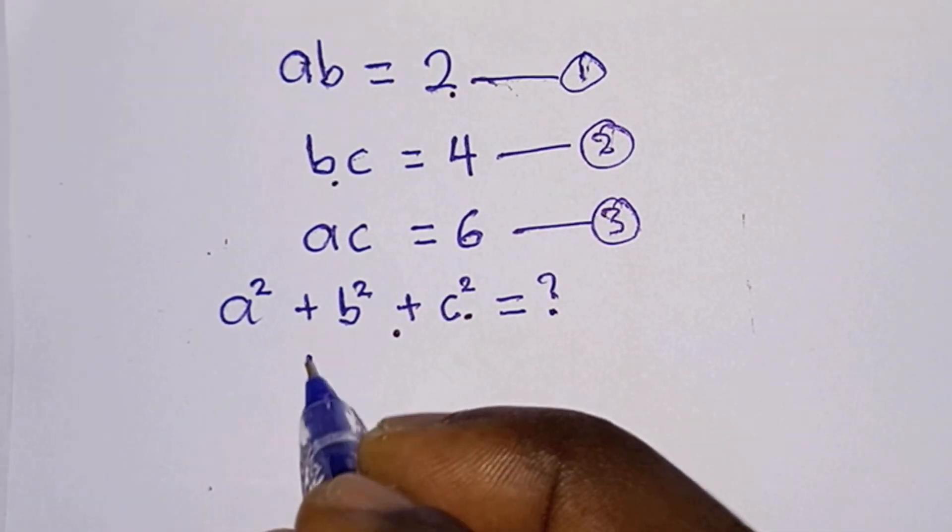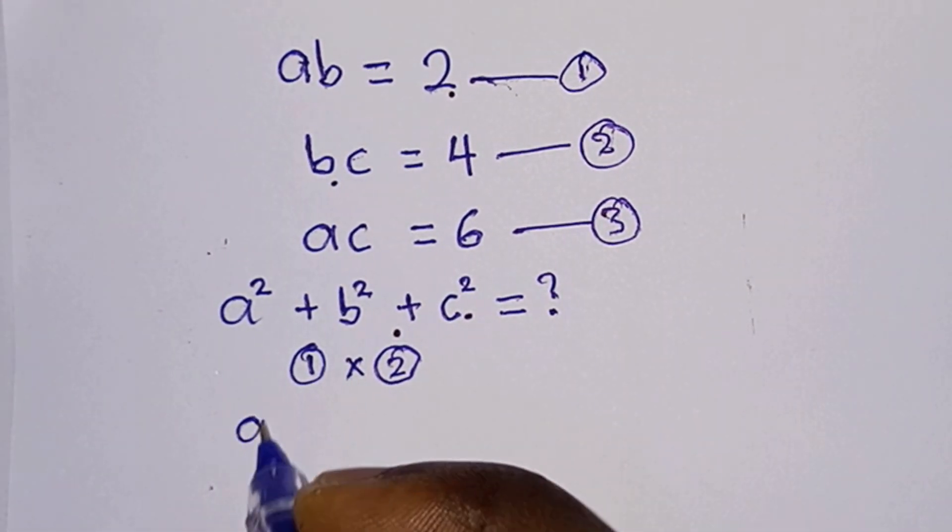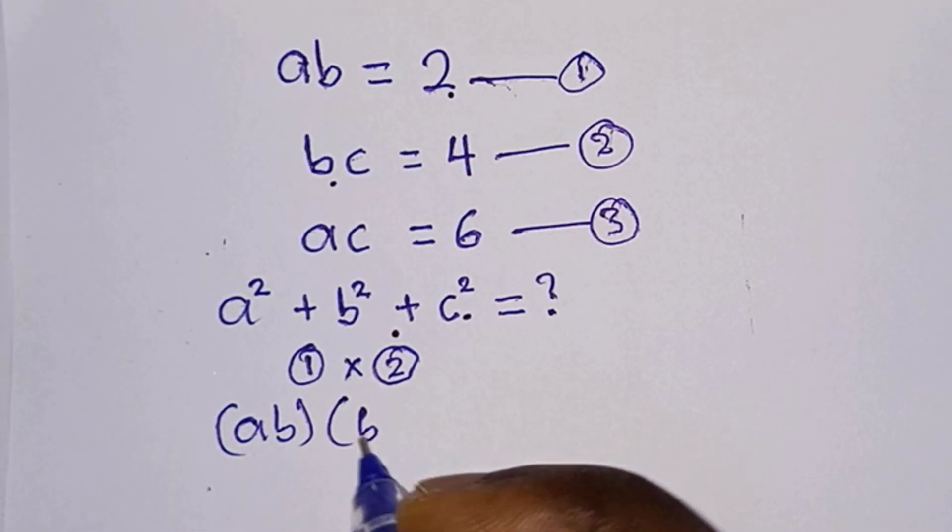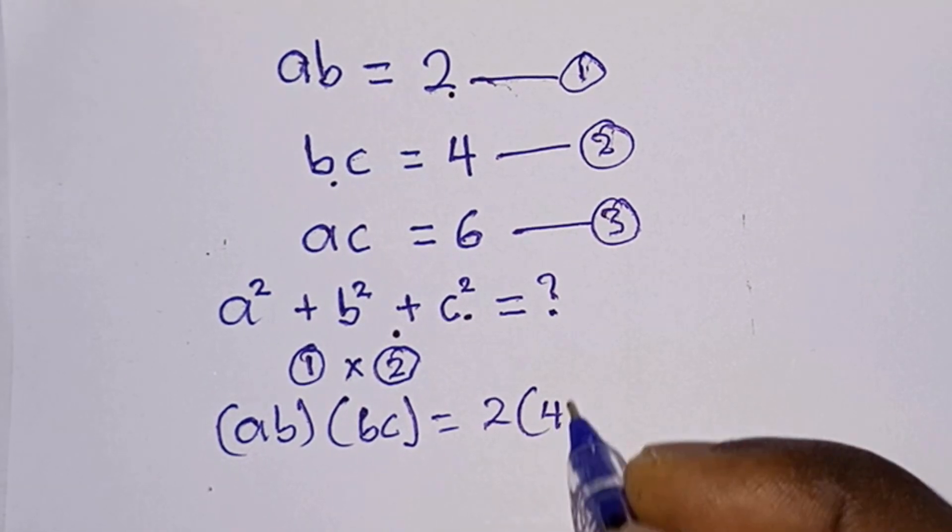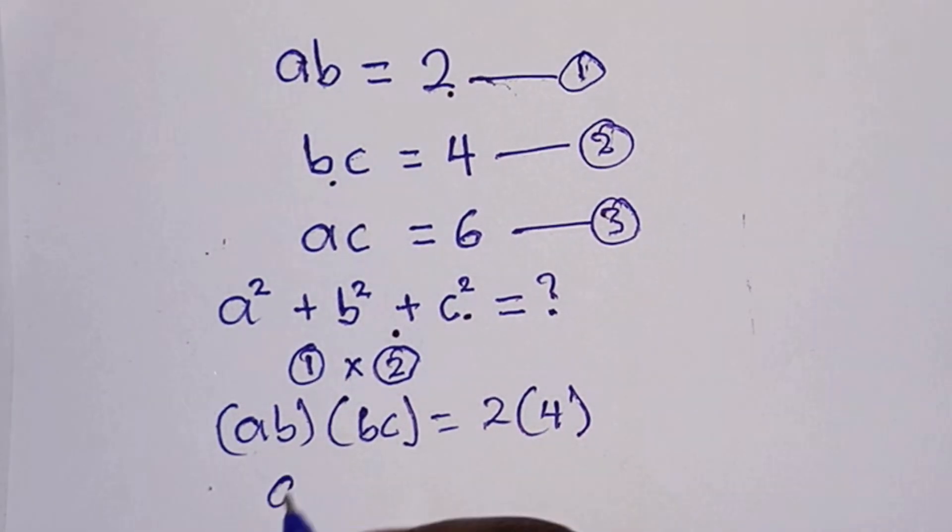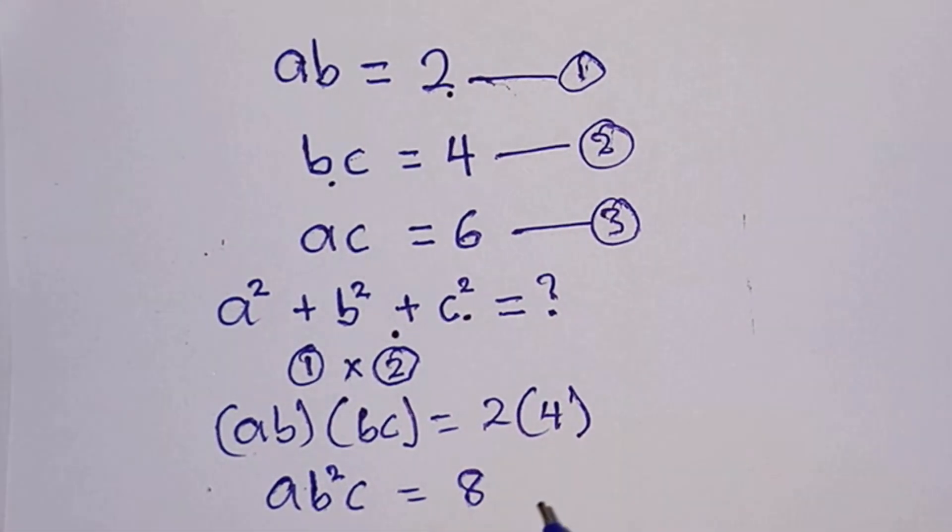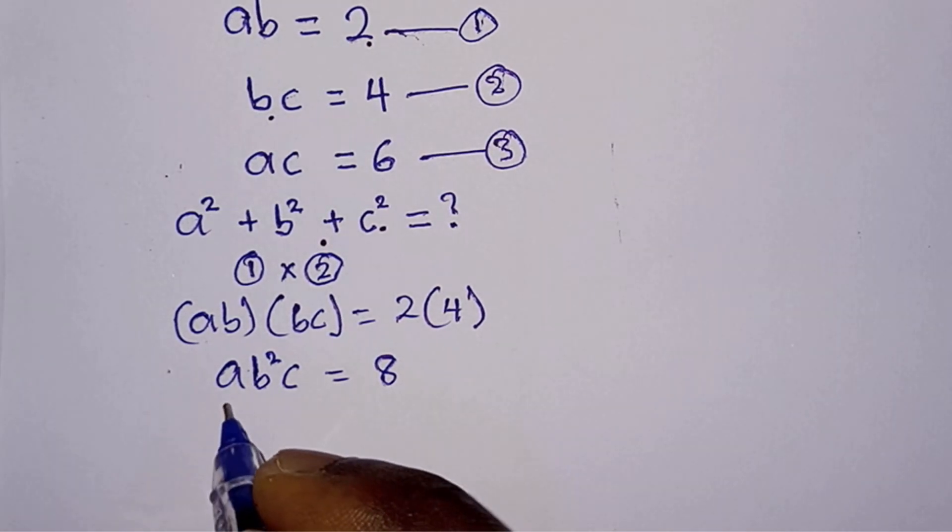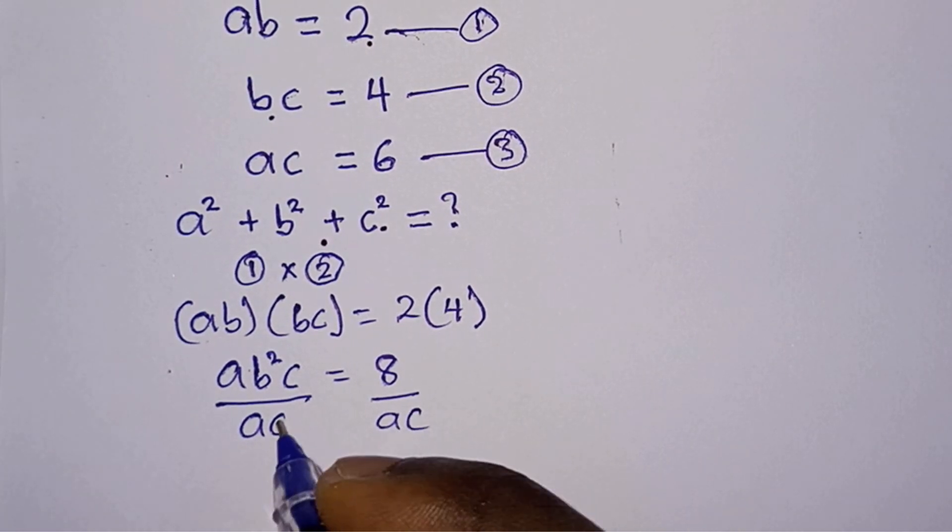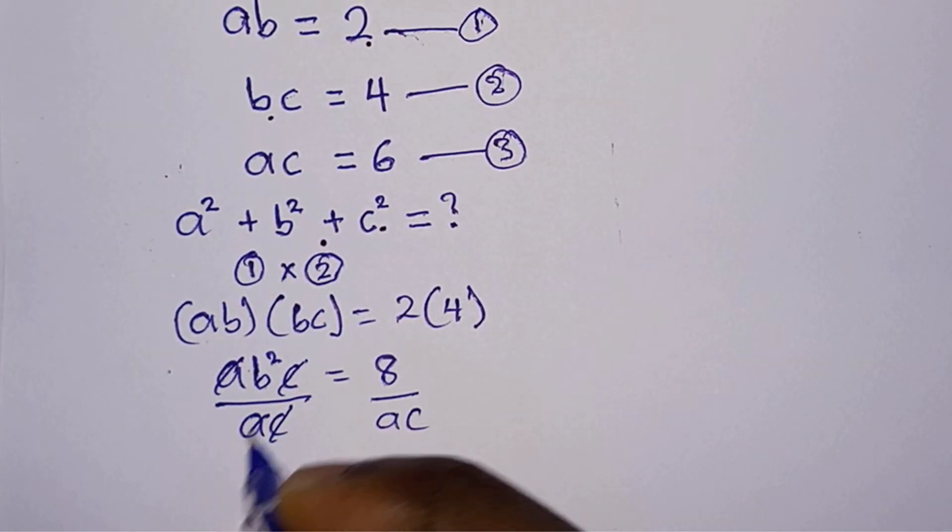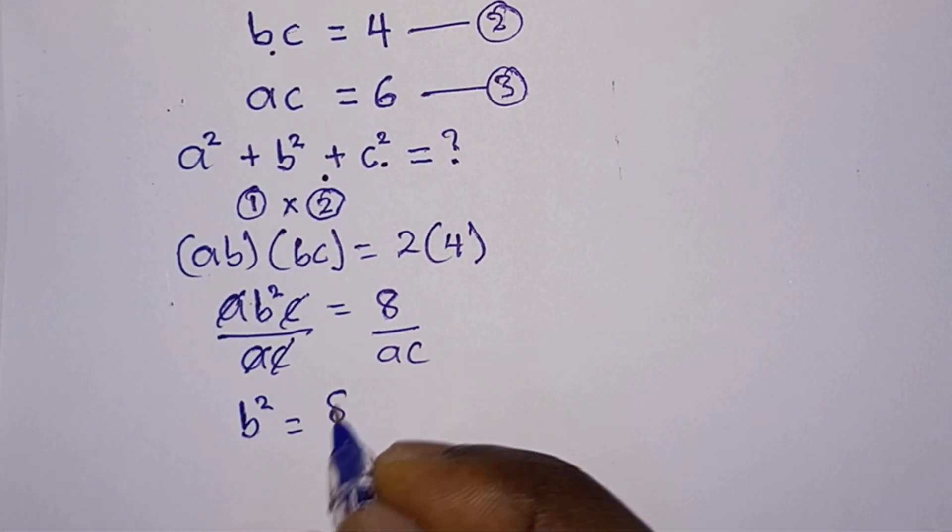Then we will multiply equation 1 times equation 2. So we have ab times bc equals 2 times 4. So we have ab²c = 8. Then from here we will divide each side of the equation by ac. So this and this will go, this one and this one will also go. Now we have b² = 8 over...